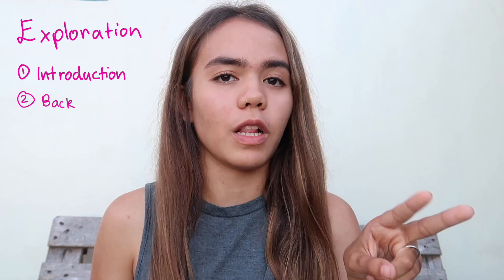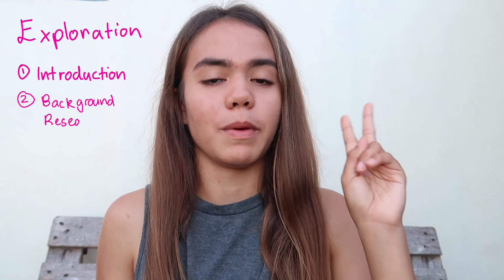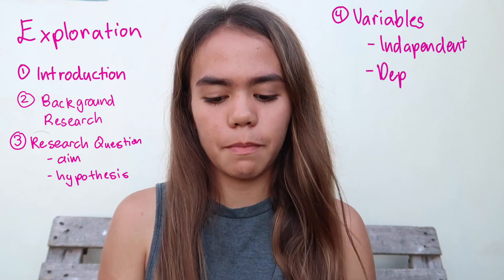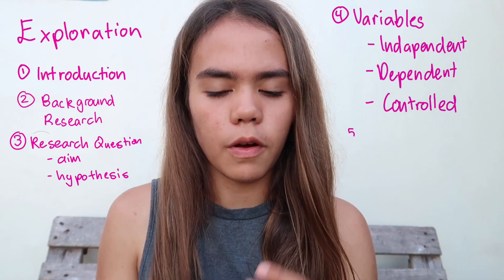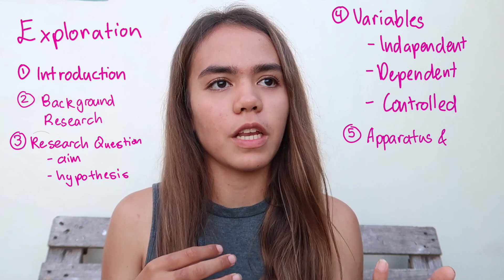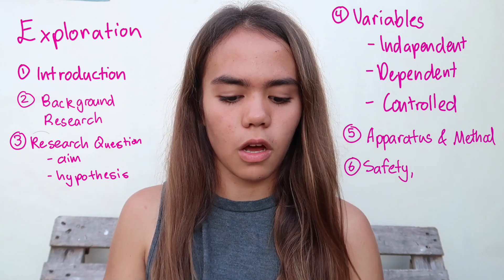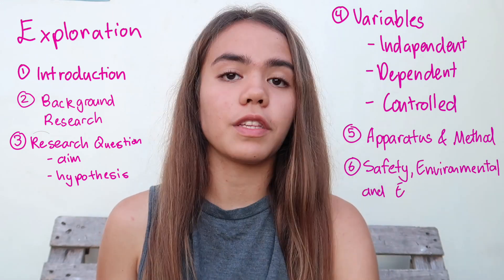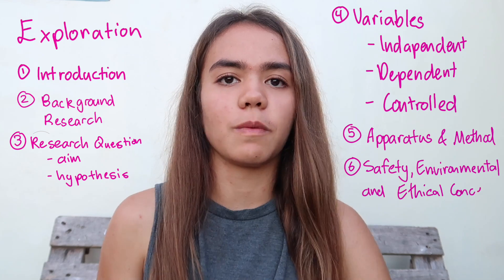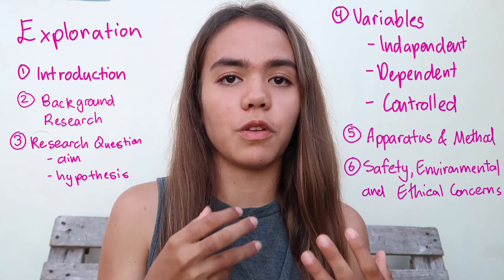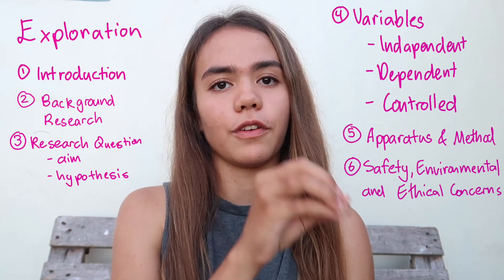Then you need appropriate and relevant background information to show what your research is going to be based off of. Then you actually need to state your research question paired with an aim and hypothesis. After that, you'll need a section identifying the variables: the independent variable, the dependent variable, and the controlled variable. Following that, you'll want a section describing your apparatus and the method used to conduct the experiment. And finally, you'll want a section on safety, ethical, and environmental issues. This section centers around the experiment and developing the question — do this part well and you'll score higher marks in your exploration section.